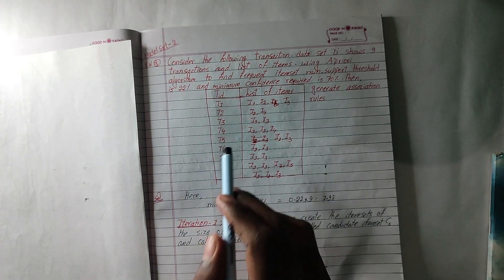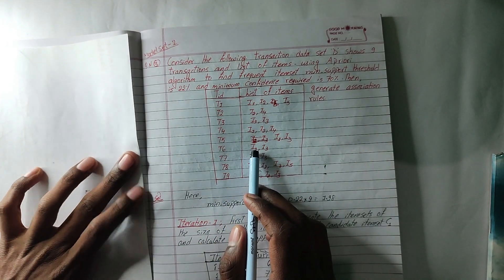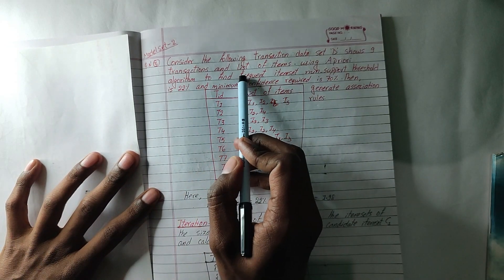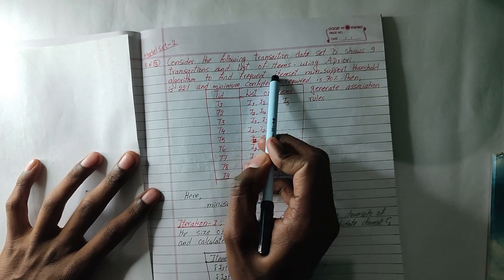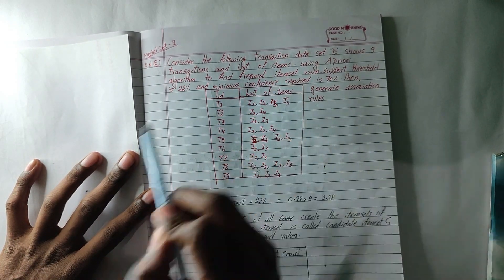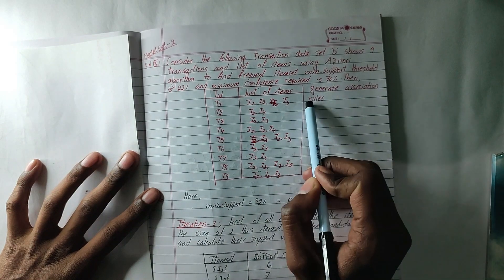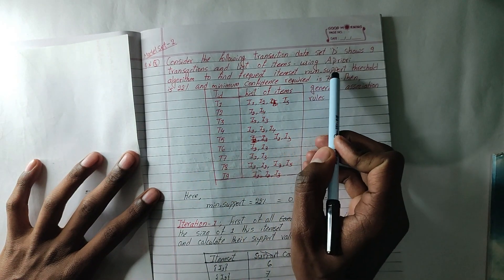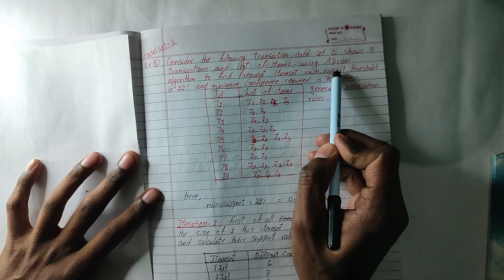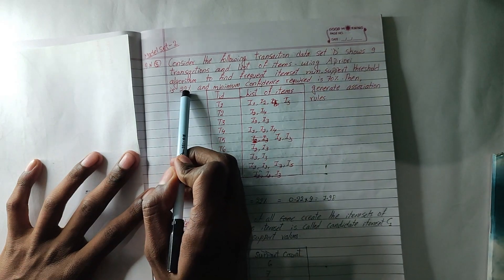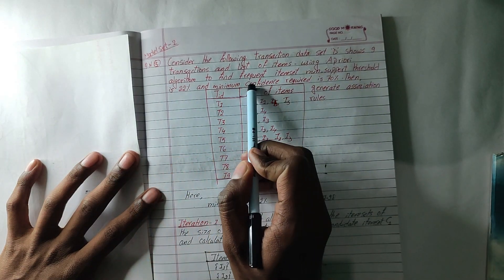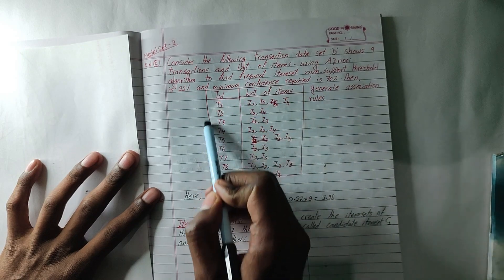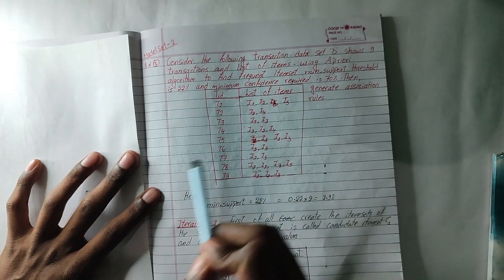Now I am going to show you a direct question. In this question, you can see the frequent item set. You can see the association rule generate. You can see the minimum support 300. You can see the confidence of 30 percent. The table is like this.